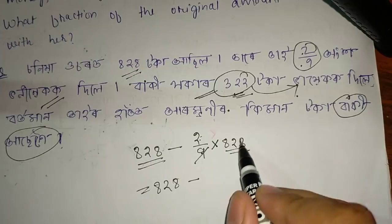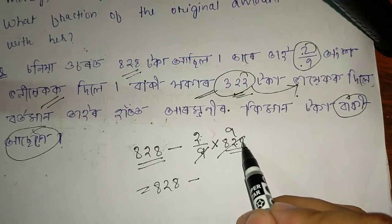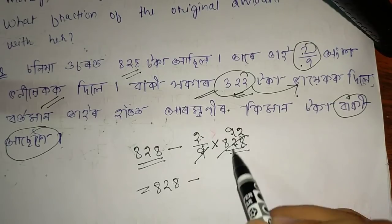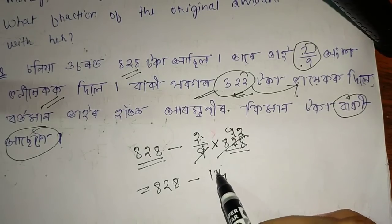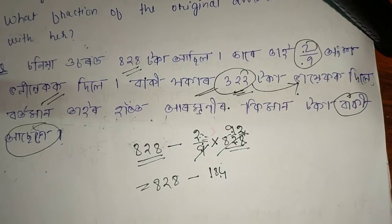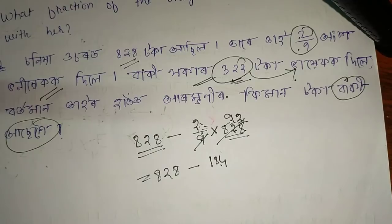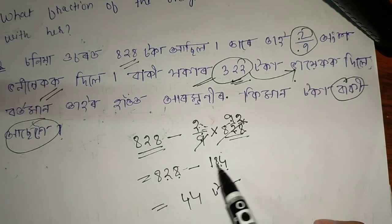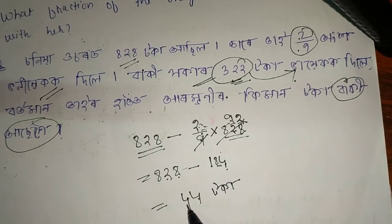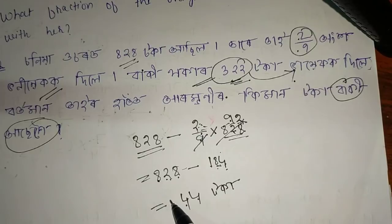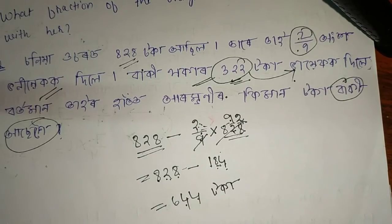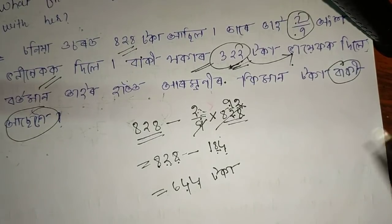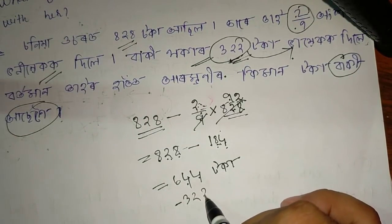So 828 minus 828 × 2/9: carrying over — we get 644 remaining. Battaman, she now has 644 rupees. Then she gives 3/22 to her brother — 644 minus 3/22. After that subtraction we get 322 rupees remaining.